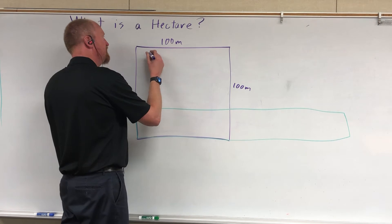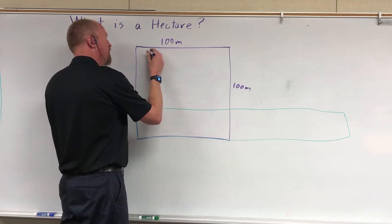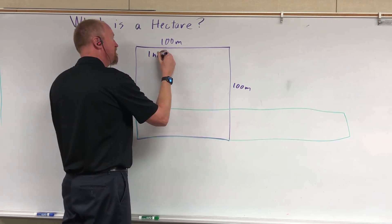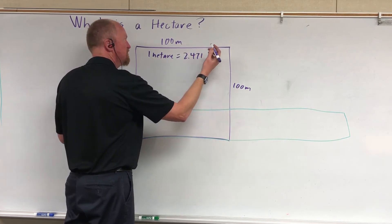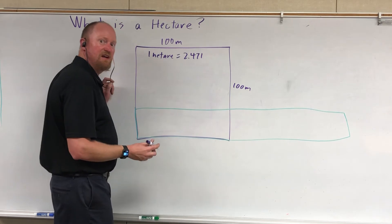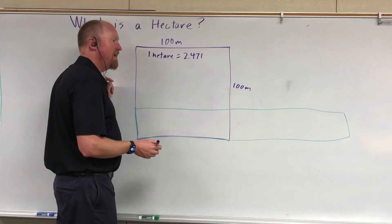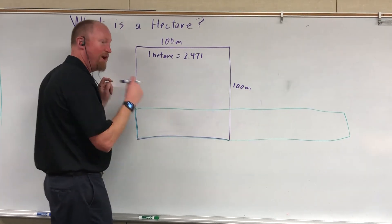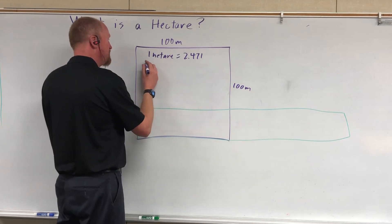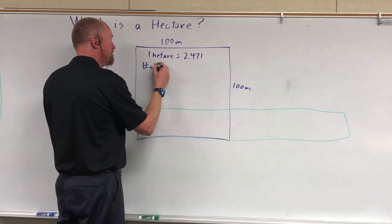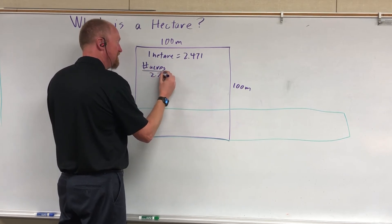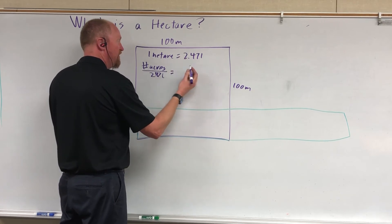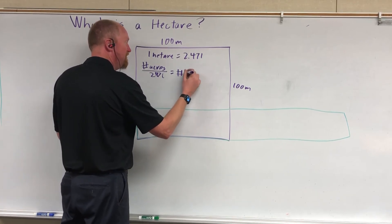The actual number is that one hectare is equal to 2.4710 acres. So if you want to convert acres to hectares, you simply take the number of acres and divide it by 2.471, and that'll give you the number of hectares.